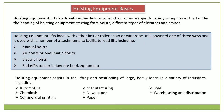Hoisting equipment lifts loads with either a link chain, roller chain, or wire rope. It is powered by one of these three ways and is used with a number of attachments to facilitate load lift. The attachments include a manual hoist, which lifts a load under the direction of an operator who typically raises and lowers a lever to activate a ratchet and pawl configuration that incrementally lifts and lowers the load, or to apply and release tension. It is also called a lever hoist. There is also the hand chain hoist, which is typical manual hoisting equipment used with a hand chain to lift or lower the load.